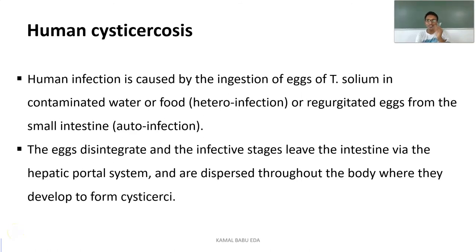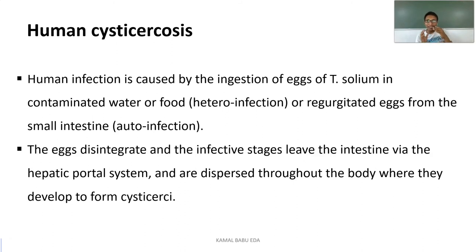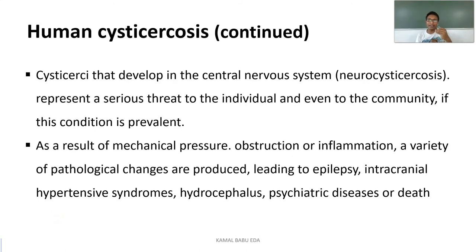Human cysticercosis results when a healthy individual is infected with the eggs of Taenia solium, entering through contaminated water, contaminated food, or sometimes regurgitated eggs from the small intestine — also called autoinfection. The eggs leave the small intestine via the hepatic portal system, disseminate throughout the body, and develop into cysticerci wherever conditions are suitable for their growth. These cysticerci can develop in the central nervous system, causing neurocysticercosis.